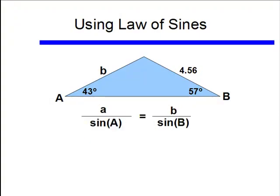So if I recall, one form of the law of sines was A over sine A is equal to B over sine B. Of course this is also equal to C over sine C, but let's just focus on this right now, because I know A, my angle A is 43 degrees, I know my angle B is 57 degrees, and I know my side A is 4.56. So all I need to do is solve for B.